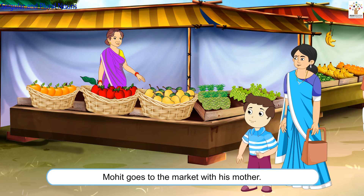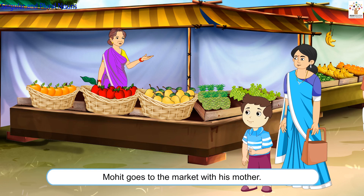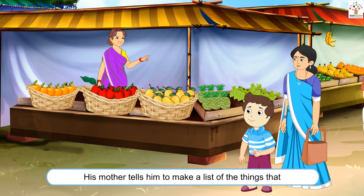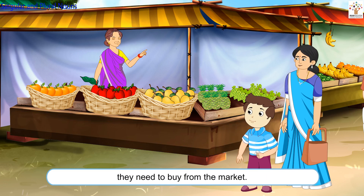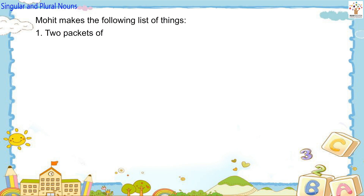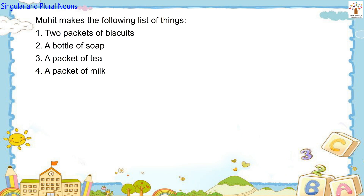Mohit goes to the market with his mother. His mother tells him to make a list of the things that they need to buy from the market. Mohit makes the following list of things: two packets of biscuits, a bottle of soap, a packet of tea, a packet of milk, six apples, six mangoes.